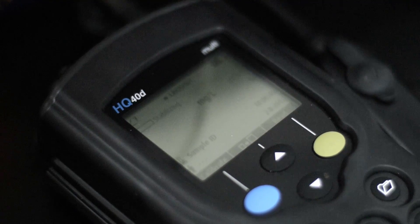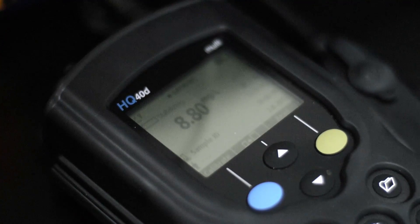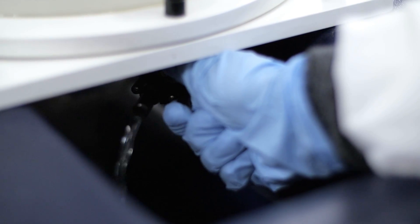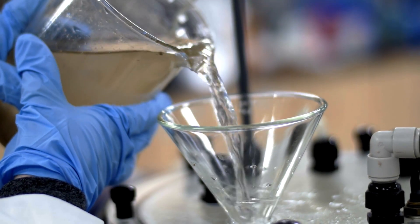To use the reactor, students calibrate oxygen meters on the reactor. They then fill a tank with feed water and prime the reactor by adding water.